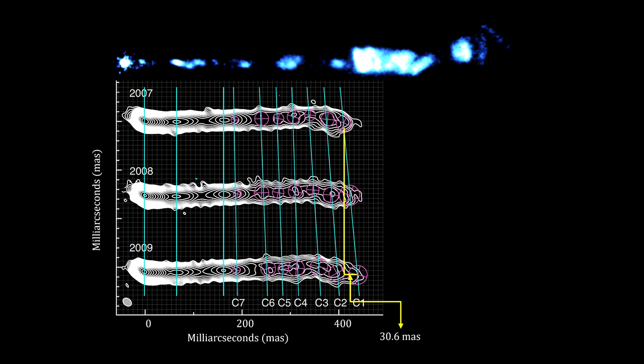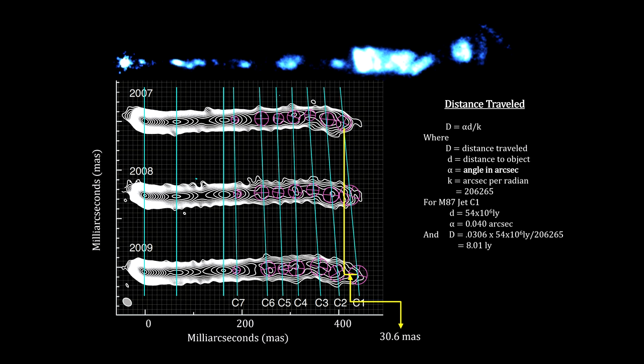They found that one of the components moved 30 milli-arc seconds over two years. That's a very tiny amount, but when you multiply it by the large distance to M87, we find that the distance traveled was eight light years. To travel eight light years in just two years means its velocity is four times the speed of light.